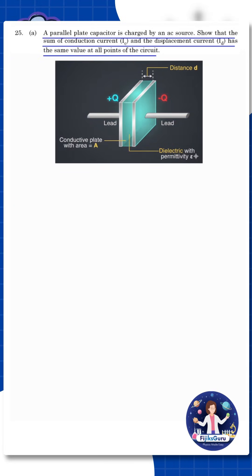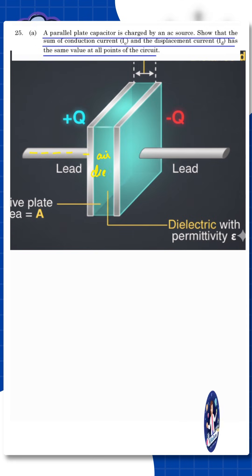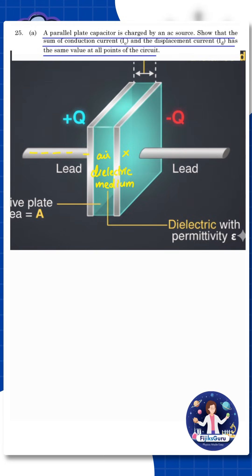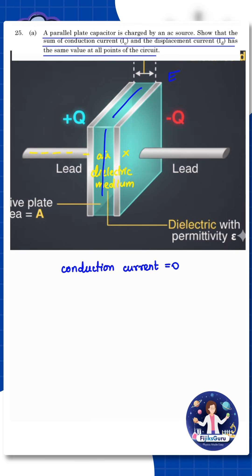Displacement current — what do you see? Displacement current is a fake or imaginary current. Electrons are flowing in the wire, but inside the capacitor gap, there is no actual electron flow because there is an air gap or dielectric medium. So conduction current inside the capacitor is zero, and instead there is an electric field in the gap. The electric field goes from the positive plate (+Q) to the negative plate (−Q).